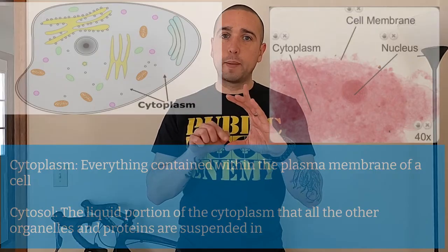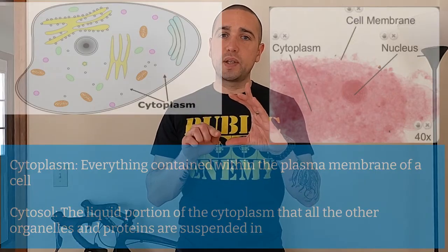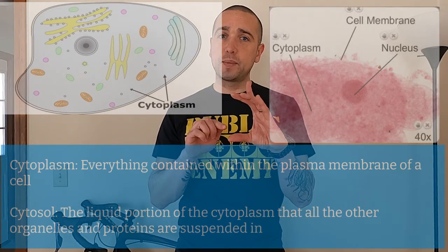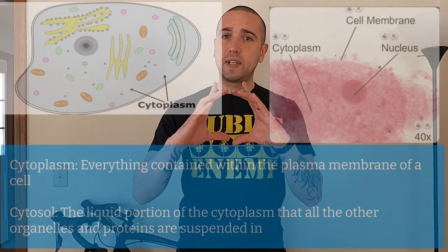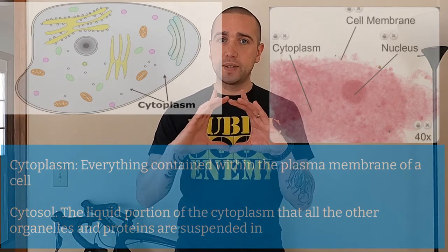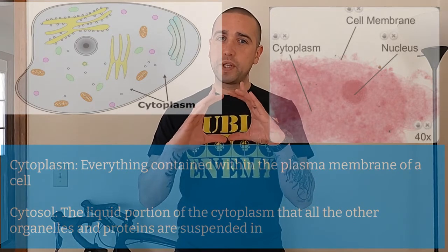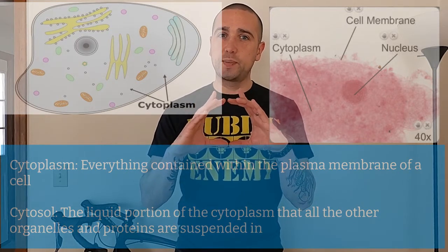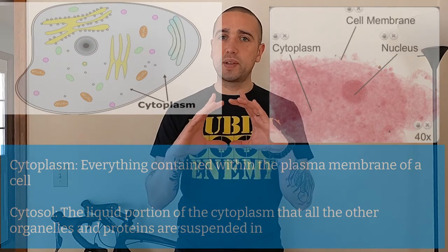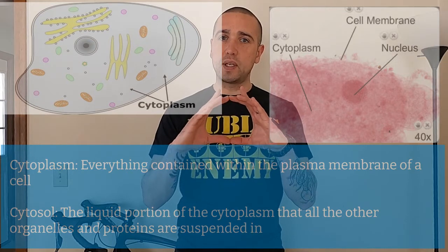Everything within the plasma membrane is called the cytoplasm, which includes all of the inside organelles. The liquid that everything is suspended in is called the cytosol.